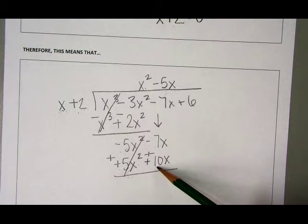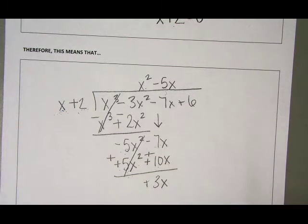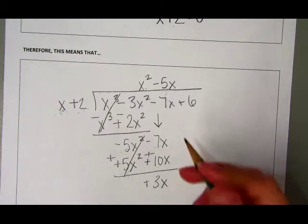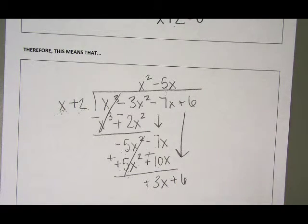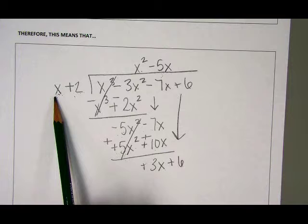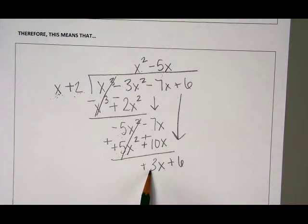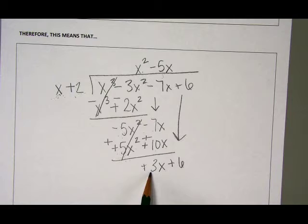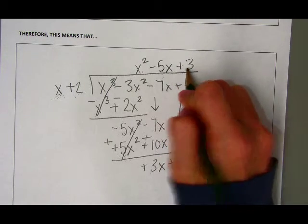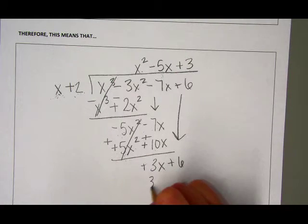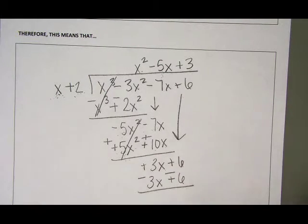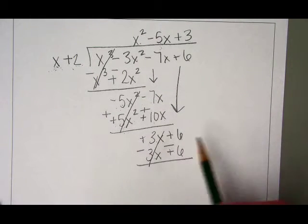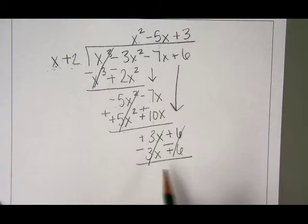Negative 7x plus 10x gives me positive 3x. I have two terms on the outside and one on the inside, so I bring down another term — my plus 6. My leading x on the outside is just x; my leading value on the inside is positive 3x, so I need a positive 3. 3 times x is 3x, and 3 times 2 gives plus 6. Subtracting: 3x minus 3x cancels to zero, and 6 minus 6 also cancels to zero — no remainder.